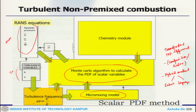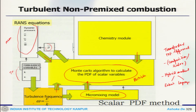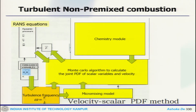From the particle solution, we estimate density and other transport properties like viscosity, which are sent back to the mean flow field equation. The commonality between the transported PDF approach and the presumed PDF approach is that the mean density and transport properties bridge the mean flow field and the local situation.